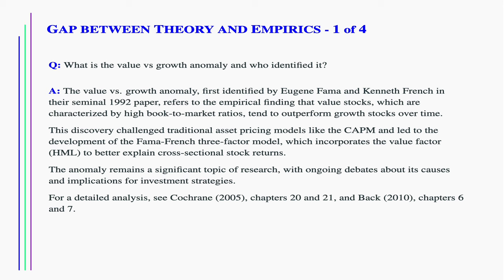The value versus growth anomaly, first identified by Eugene Fama and Kenneth French in their seminal 1992 paper, refers to the empirical finding that value stocks, which are characterized by high book-to-market ratios, tend to outperform growth stocks over time. This discovery challenged traditional asset pricing models like the CAPM and led to the development of the Fama-French three-factor model, which incorporates the value factor, HML, to better explain cross-sectional stock returns. The anomaly remains a significant topic of research, with ongoing debates about its causes and implications for investment strategies. For a detailed analysis, see Cochrane, 2005, chapters 20 and 21, and Back, 2010, chapters 6 and 7.